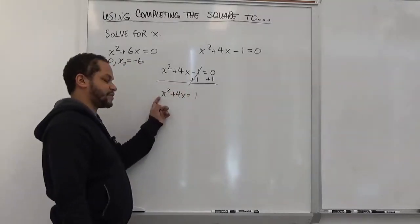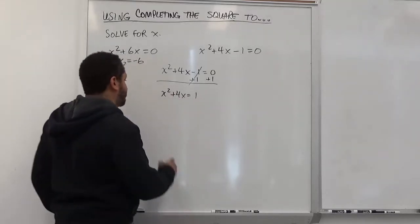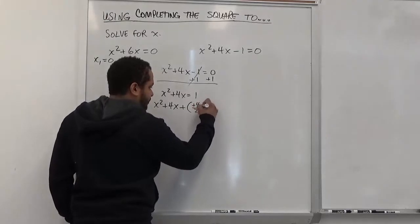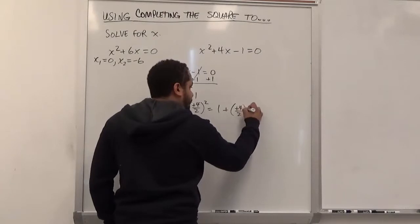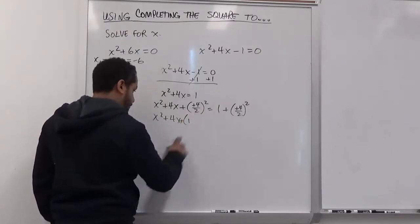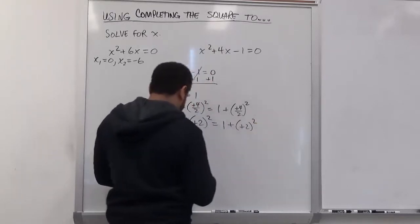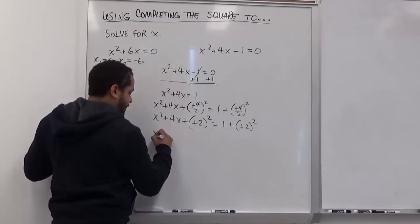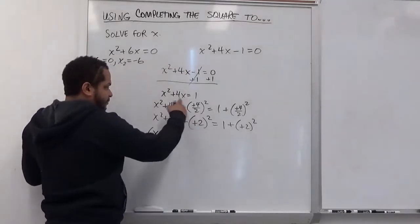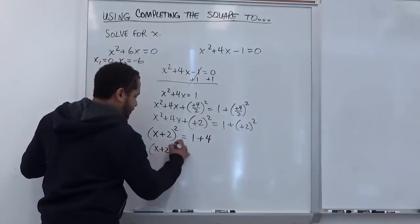Again we're going to complete the square by first checking if there's a coefficient on x squared — in this case there is none, which makes our life a lot easier. We're going to take half the middle term and add it to both sides. The middle term is positive 4x, so we add positive 4 divided by 2, squared, to both sides. Simplifying, we get x squared plus 4x plus positive 2 squared equals 1 plus positive 2 squared. Completing the square on the left gives us x plus 2, and the right hand side is 1 plus 4, which equals positive 5.